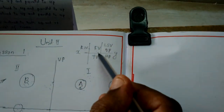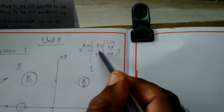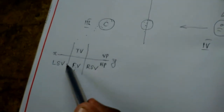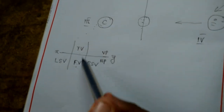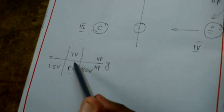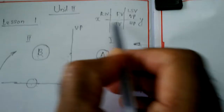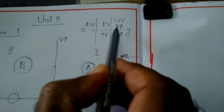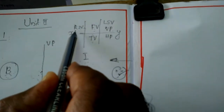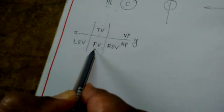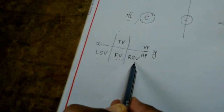In first angle projection method, the front view is above the XY line and the top view is below the XY line. When you compare with third angle projection method, the positions are just reversed. In first angle, front view is below and top view is above — wait, it is reversed: in third angle, front view is below and top view is above. For side views: in first angle projection method, the left side view is to the right of the front view, and the right side view is to the left of the front view.